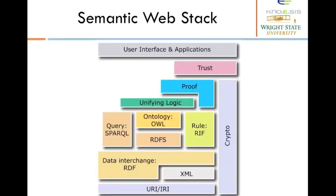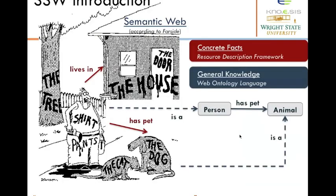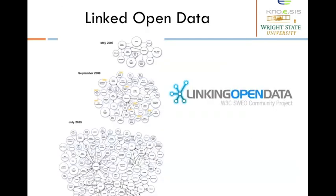The semantic web consists of various components. The most important are the representational component — including RDFS and OWL — the query component, and the inference component. A lot of semantic web data is being published on the web, with a constant increase in the number of datasets. These interlinked datasets are called linked open data, with over 50 billion statements currently published.